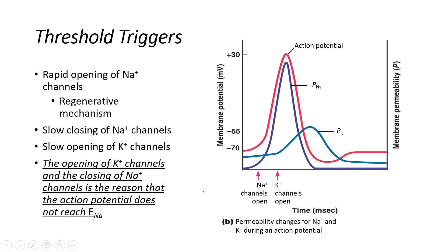This is why the action potential does not actually get to positive 60. We know that's where it's trying to go - the movement of sodium is a reflection of the membrane potential trying to get to the equilibrium potential of sodium, which is at positive 60. We don't actually get there because positive 30 is a trigger to close those sodium channels and open up potassium channels. The very fixed coordination of having these events start or stop at an exact period of time is really important to keeping the action potential uniform. The action potential always looks the same - the same amplitude, the same duration, no matter what the stimuli looks like. Having both the time component and the voltage-sensitive component is what helps bring that about.